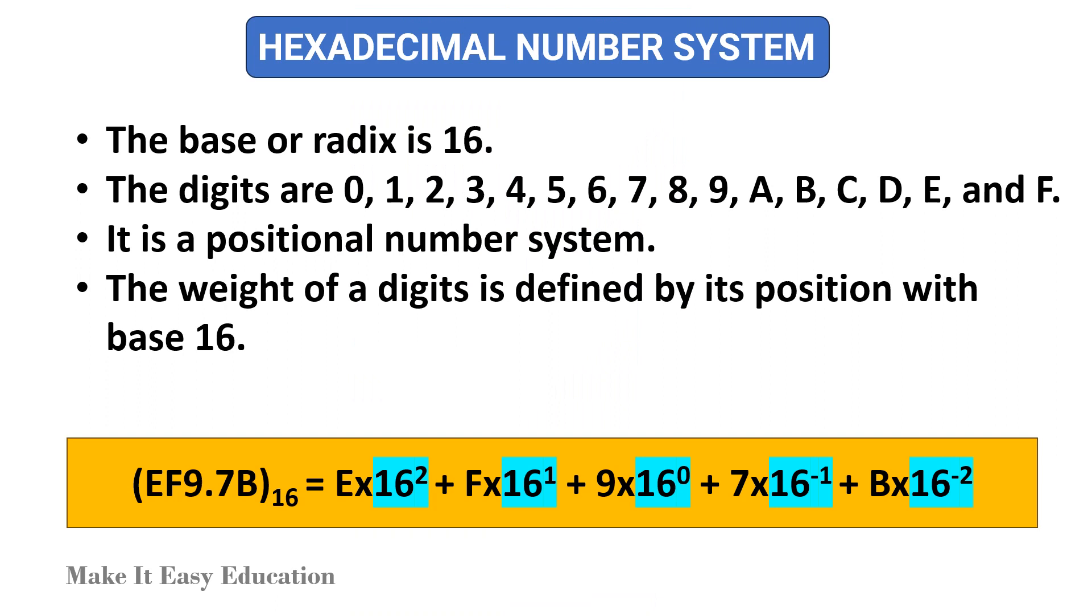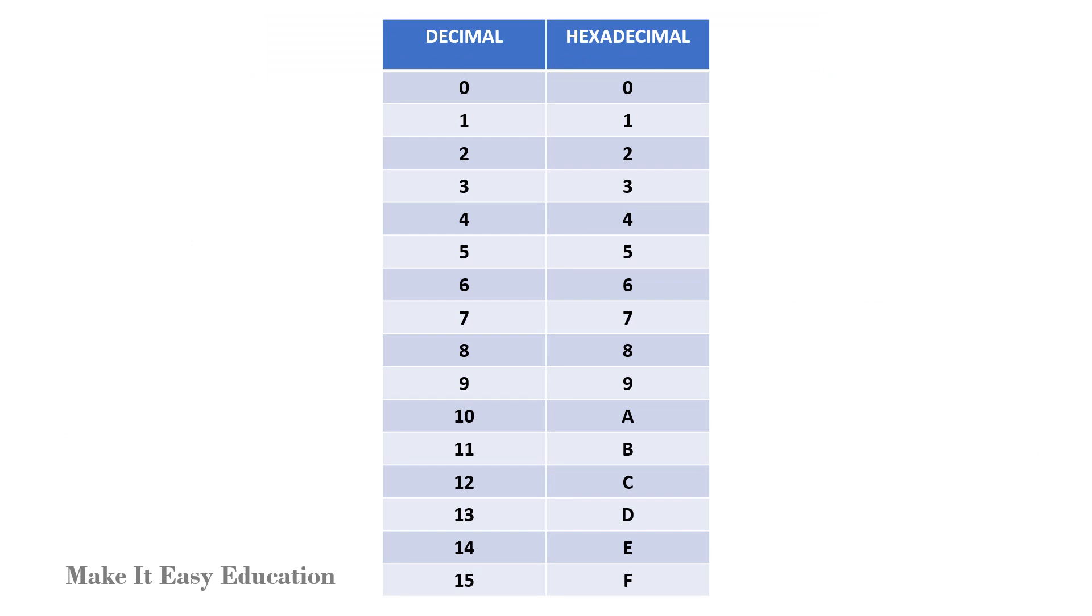Hexadecimal number system. The base or radix is 16. The digits are 0 to 9, and A to F. It is a positional number system. The weight of a digit is defined by its position with base 16. The table shows the hexadecimal equivalent of the decimal number.